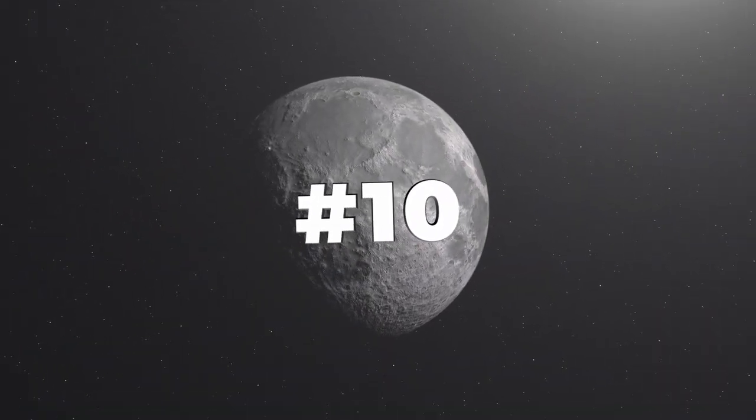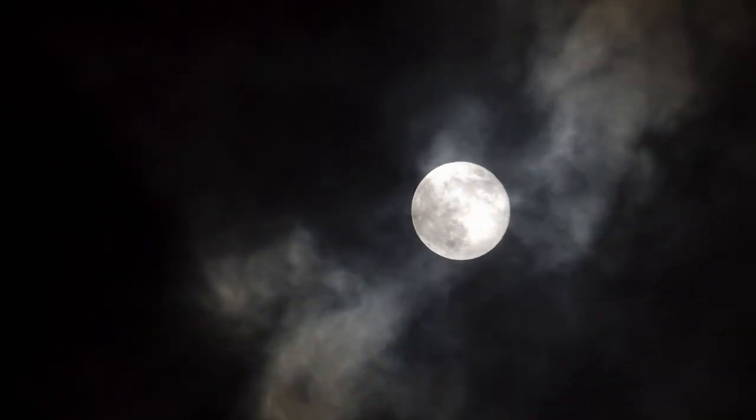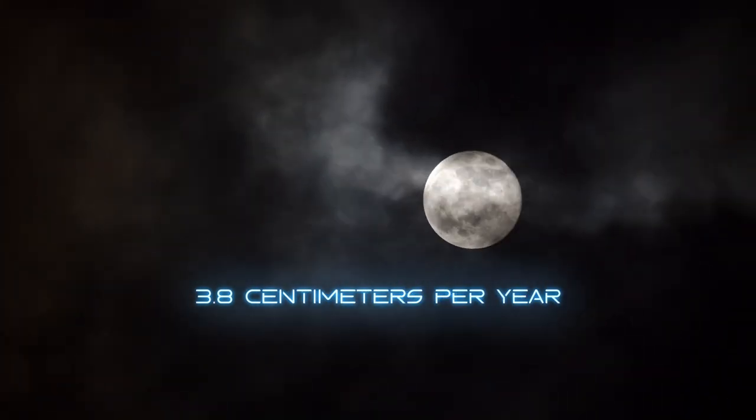Number 10. The moon is gradually moving away from Earth, at a rate of about 3.8 centimeters per year.